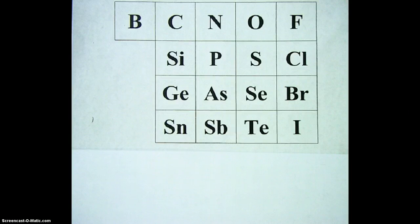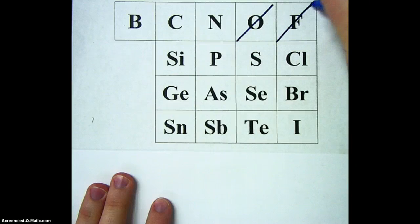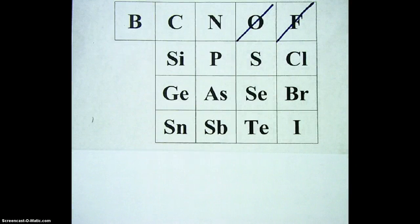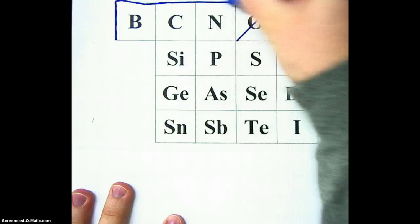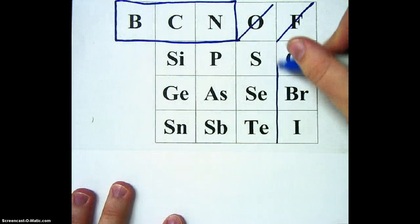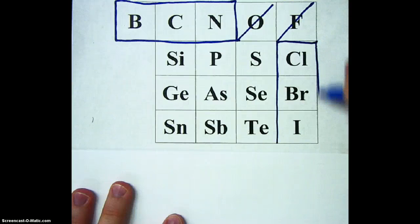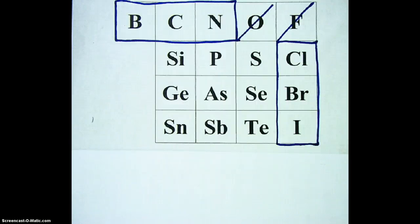The first thing we're going to do on our chart is cross out oxygen and fluorine — we just do not need them for the polyatomic ions we'll be talking about. Next, I'm going to outline these top three elements: boron, carbon, and nitrogen. And then I'm also going to outline chlorine, bromine, and iodine over here on the right. These six elements are similar in terms of their polyatomic ions, so we're going to talk about them first.